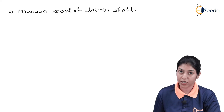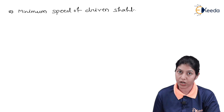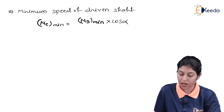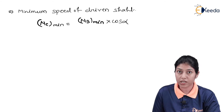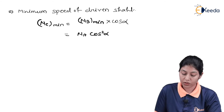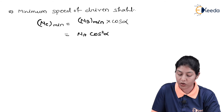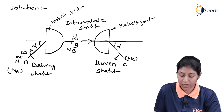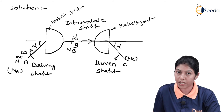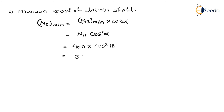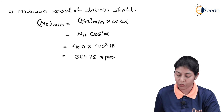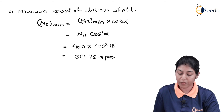For the minimum speed of the driven shaft, NC minimum = NB minimum × cos α. Substituting NB minimum = NA × cos α, we get NC minimum = NA × cos² α. Therefore NC minimum = 400 × cos² 18°, which gives 361.76 RPM. This represents the minimum speed of the driven shaft.